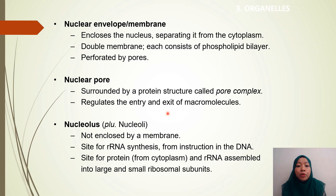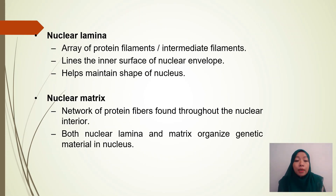The nucleolus is not enclosed by a membrane. It is the site for ribosomal RNA synthesis, getting instructions from DNA, and also the site where protein from the cytoplasm and rRNA are assembled into the large and small ribosomal subunits. The nuclear lamina is an array of protein filaments — intermediate filaments — that lines the inner surface of the nuclear envelope, helping to maintain the shape of the nucleus.